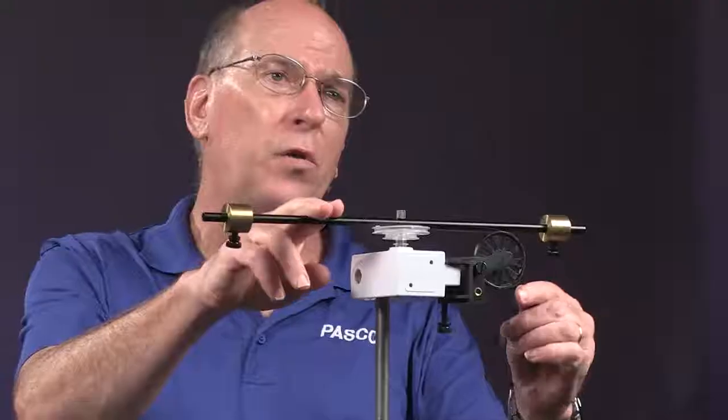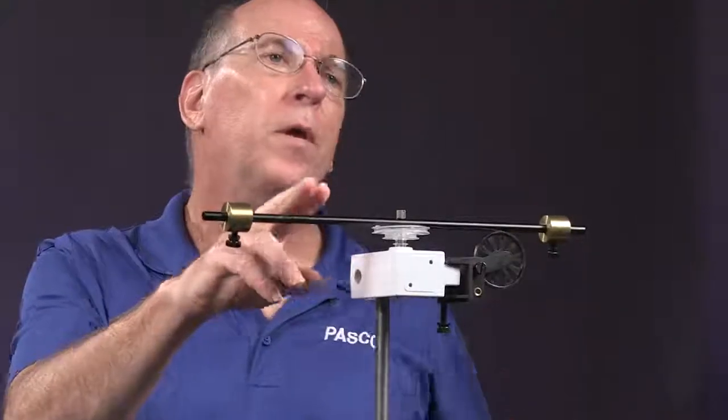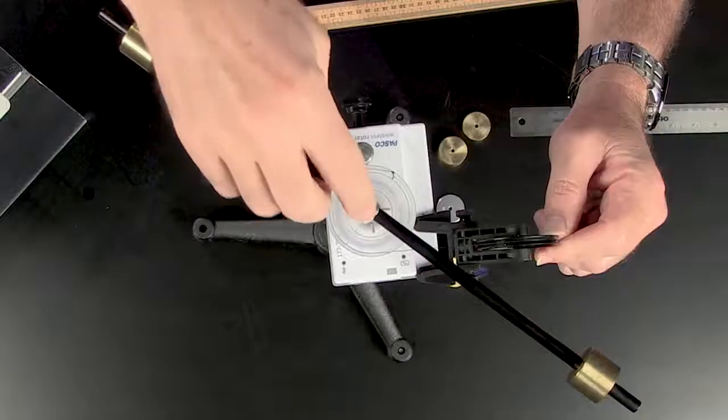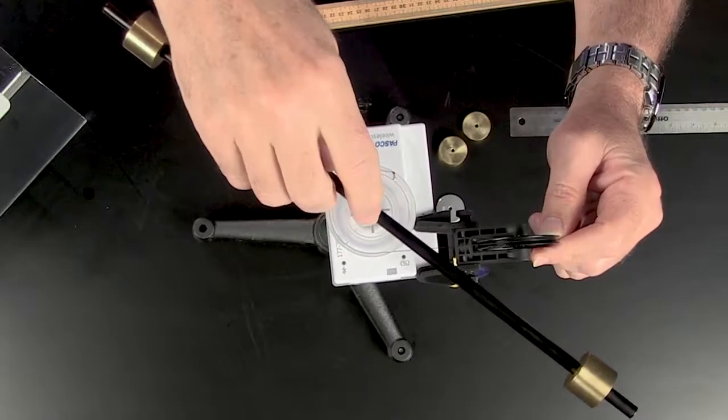In the analysis section, you'll complete the data table by calculating the net torque on the system. The net torque is the product of the force times the lever arm. In this case, the force is the tension in the string and the lever arm is the radius of the pulley groove where the string was wound.